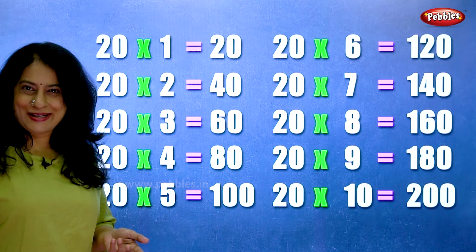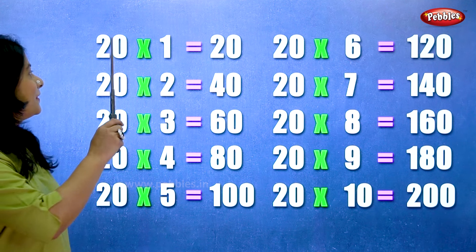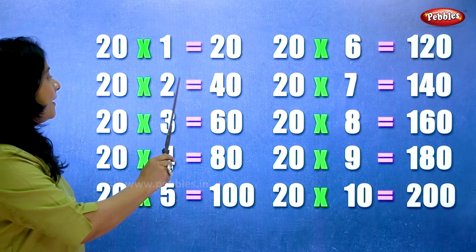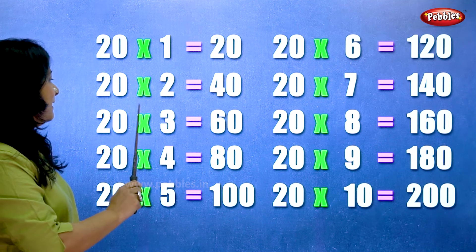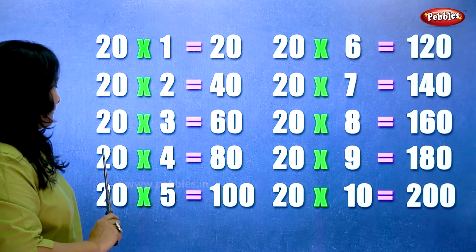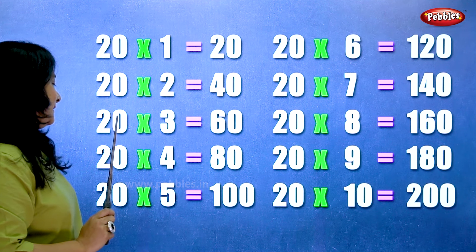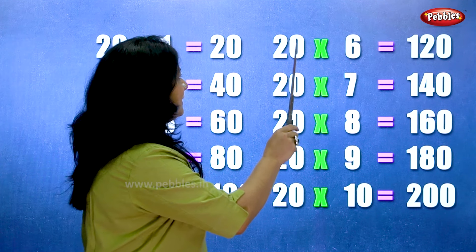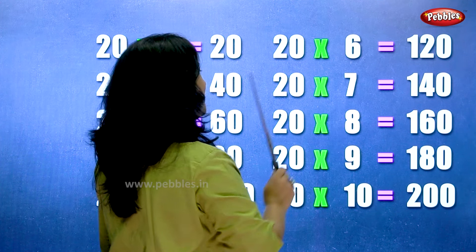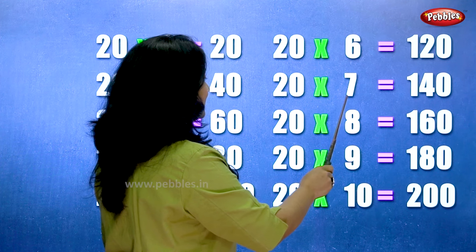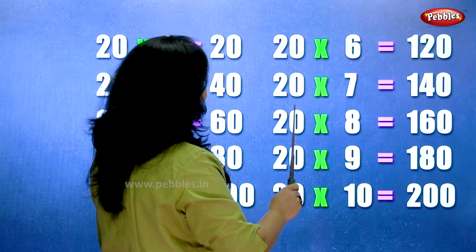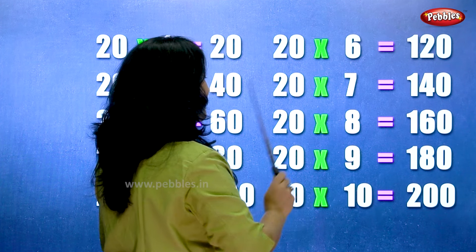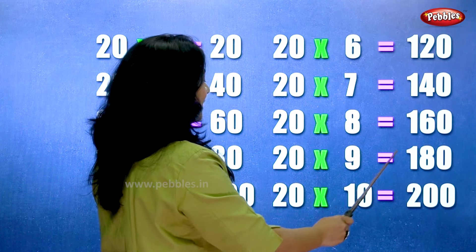Let's learn the table of twenty one more time. Twenty ones are twenty. Twenty twos are forty. Twenty threes are sixty. Twenty fours are eighty. Twenty fives are hundred. Twenty sixes are one twenty. Twenty sevens are one forty. Twenty eights are one sixty. Twenty nines are one eighty. Twenty tens are two hundred.